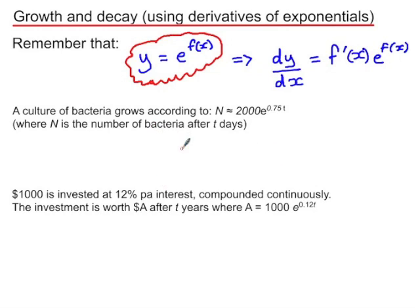Looking at a couple of situations, firstly we have a culture of bacteria where the number of bacteria N is found using an exponential function involving t, which is the number of days. So substituting in values will tell us how many bacteria there are after a certain number of days. So N₀ is when t equals 0, and we substitute in 0 for t.